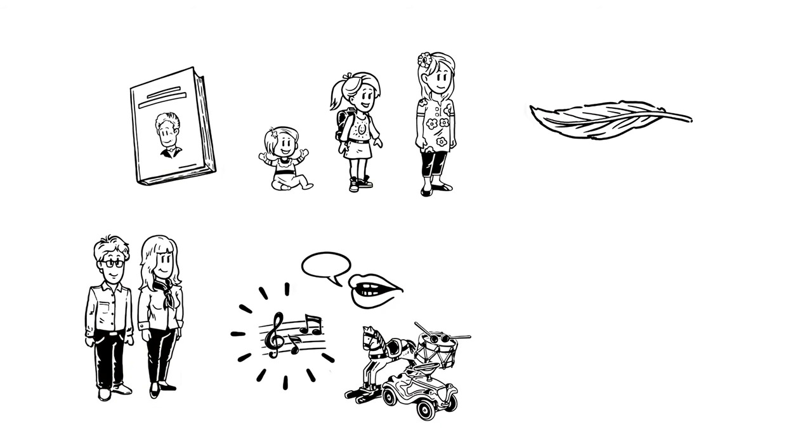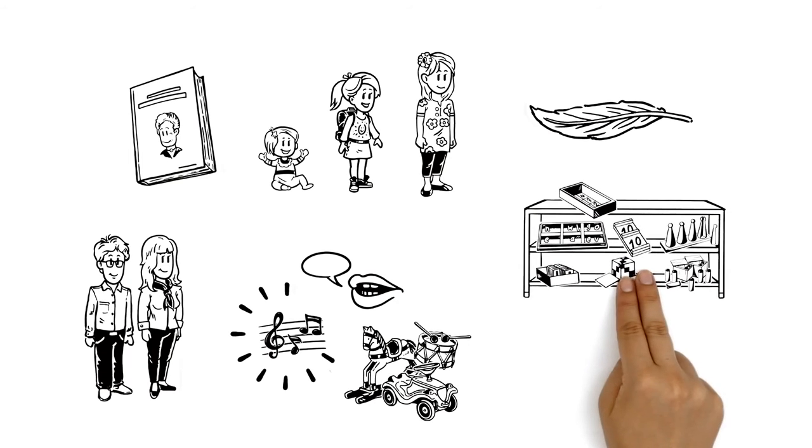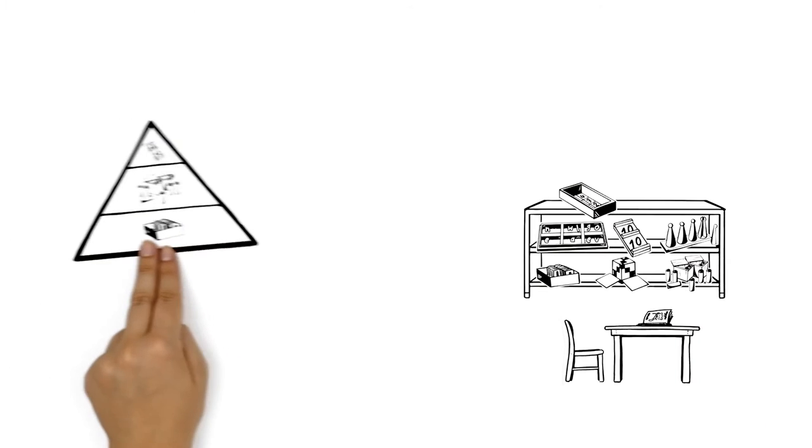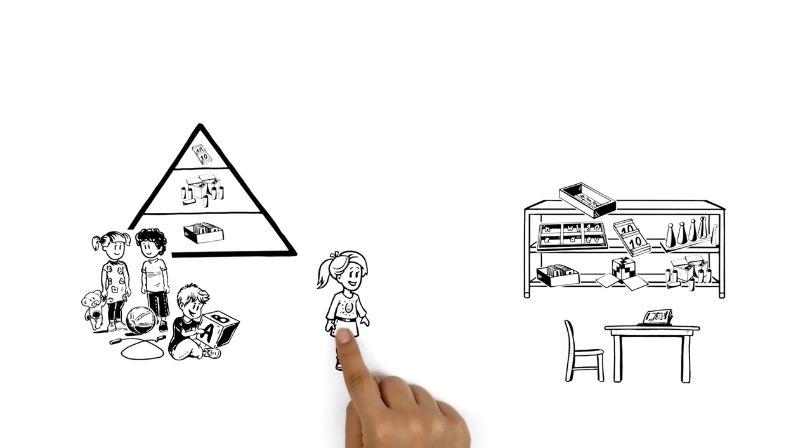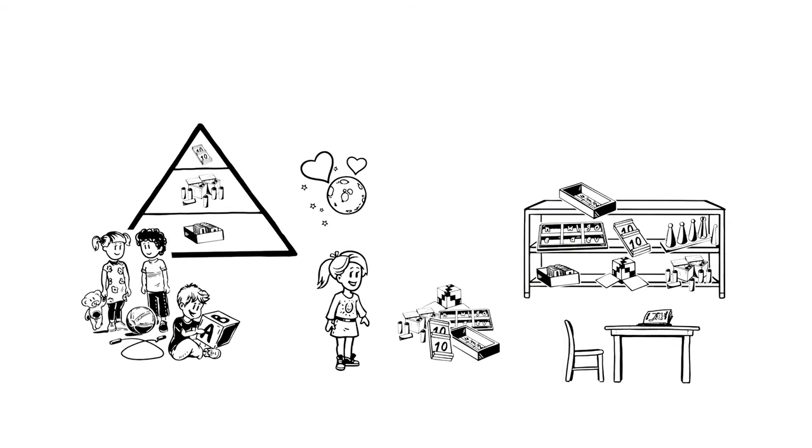It's the educator's job to support these stages by providing a prepared environment. The environment is centered on the needs of the children, such as Emma's passion for astronomy. So she receives a large amount of materials to learn more about mathematics, for example.